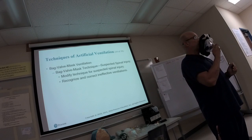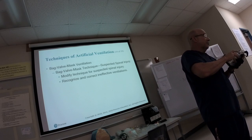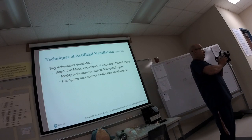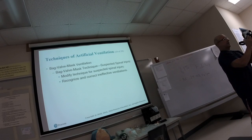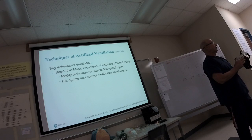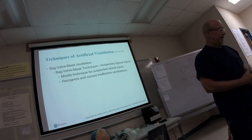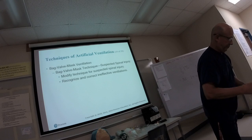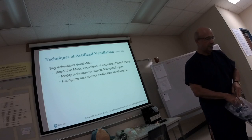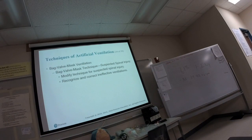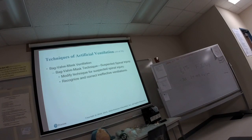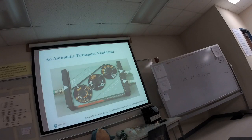CPAP requires a tight seal — tighten it with the velcro straps, push it firmly on the face. It's measured in centimeters of water; most of the time you set it around 10 cm H2O. You titrate it: start low and add a little more if it's not working, based on protocol. The patient has to be awake and able to maintain their own airway. They would be in quite a bit of respiratory distress. Indications include CHF, pulmonary edema, COPD like emphysema, asthma, and pneumonia.